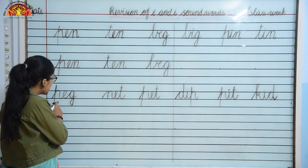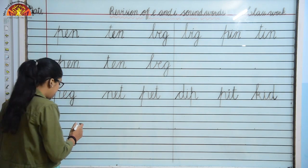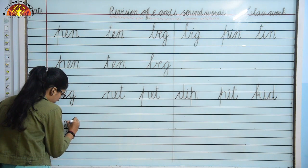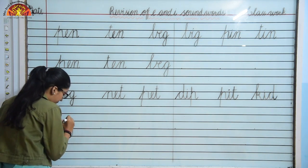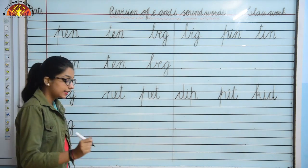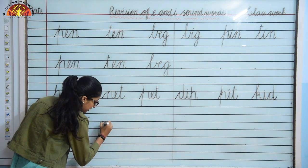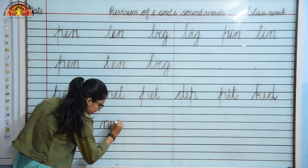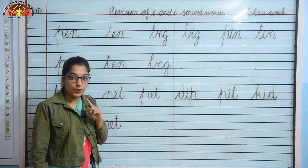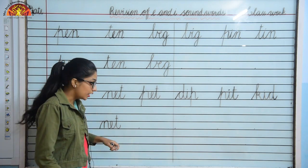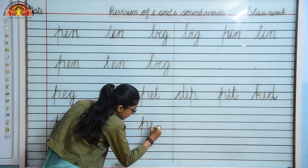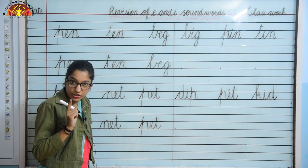Now next word is P, E, G — Peg. Let's write everyone. Come to next one: N, E, T — Net. Let's write N, E, T — Net. And next word is P, E, T — Pet. Now let's write here everyone.